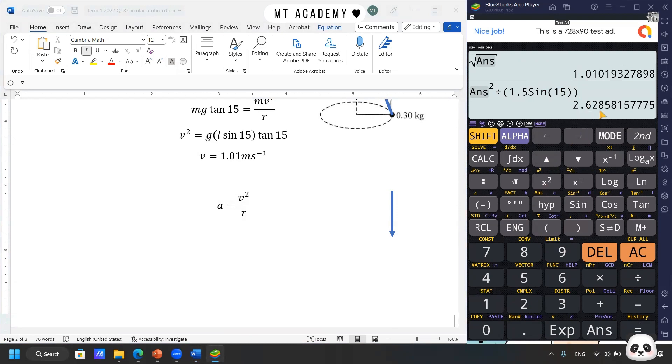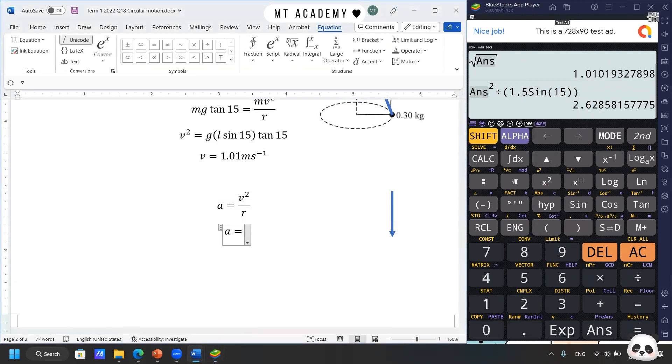So what we have is that the acceleration is 1.01 squared divided by 1.5 sin 15°. So answer is 2.63 meter per second squared.